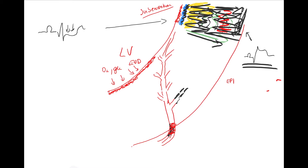Now a question about ECG. Think about this: I keep talking about ST elevation, but we have different leads. When someone shows you an ECG and you need to quickly find or exclude an infarct, which lead do you definitely look at? Which lead must you always examine to exclude or confirm ST elevation and infarct?